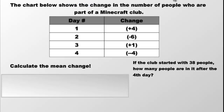The next problem: a chart shows the change in a Minecraft club. These are not the number of people in the club — this is how much the membership changed day to day. We want to know the mean change. On the first day, four people joined (positive). On the second day, six people left (negative). On the third day, one person joined. On the fourth day, four people left. We want to know the average change, so we'll add all these up and divide by four.